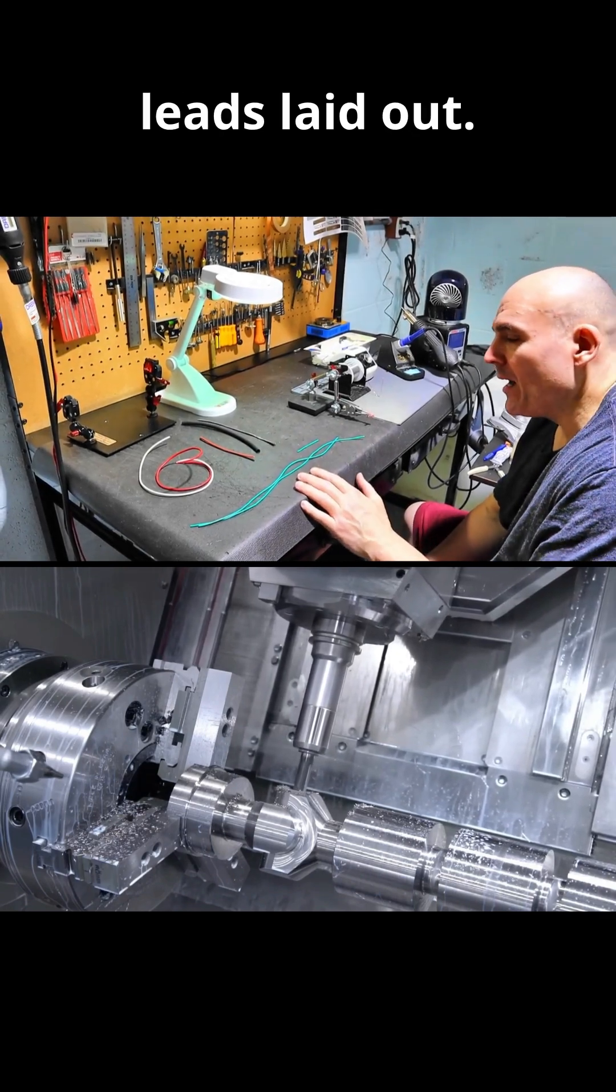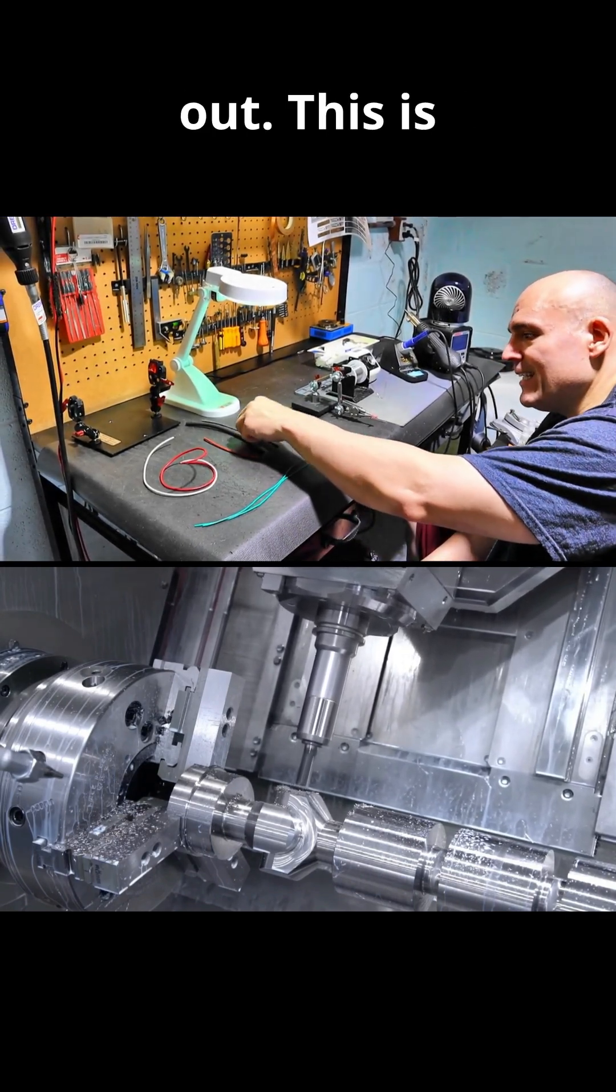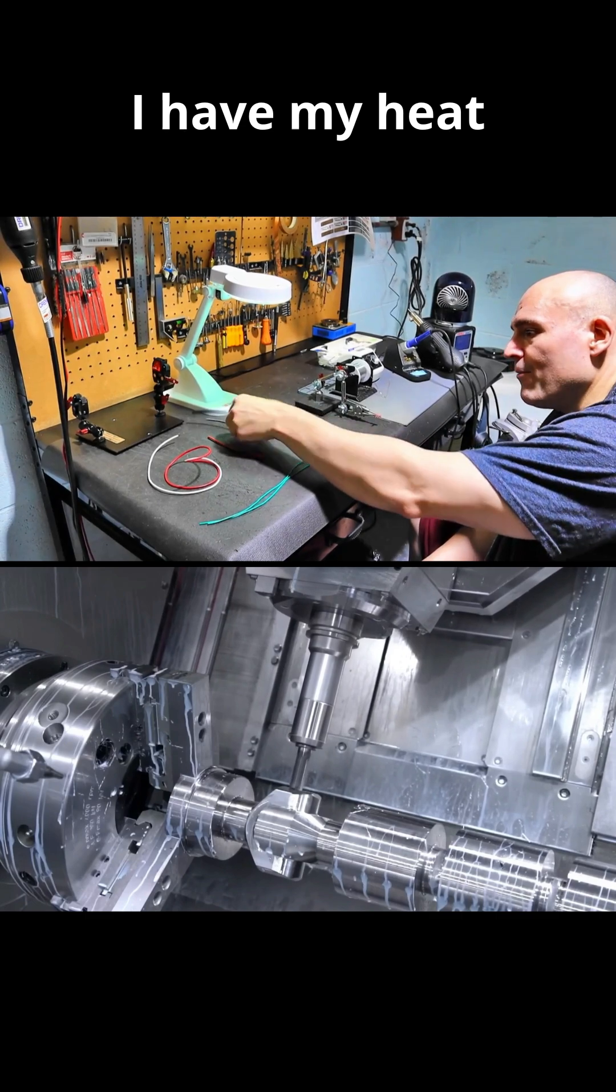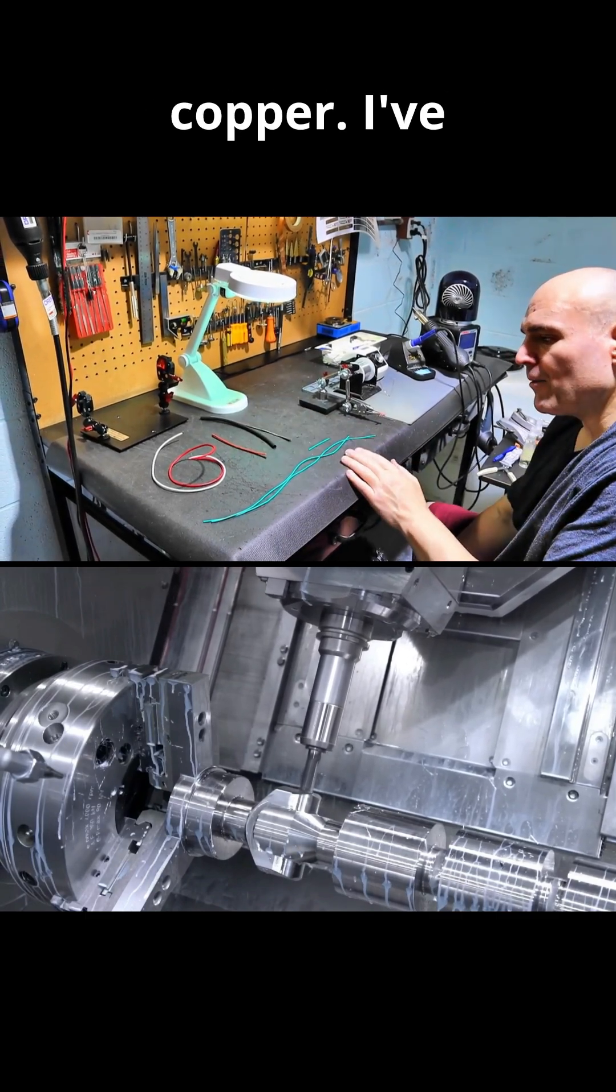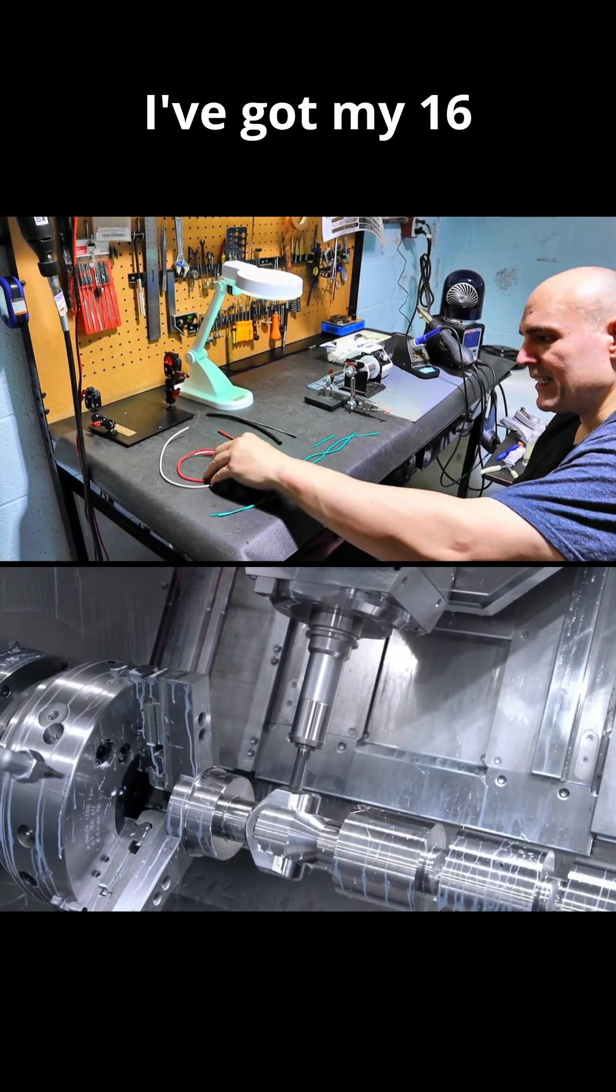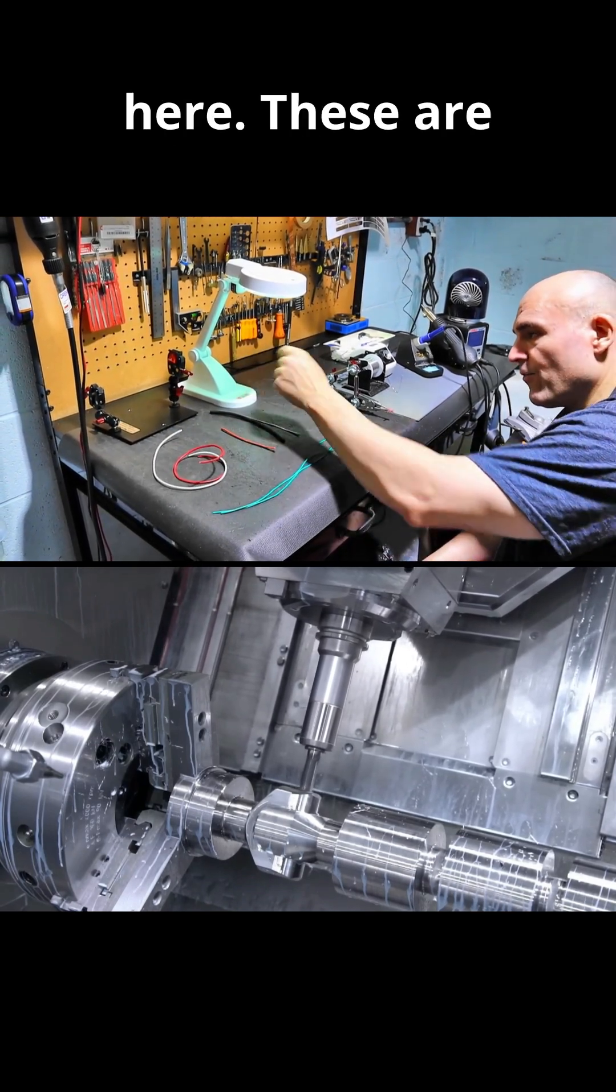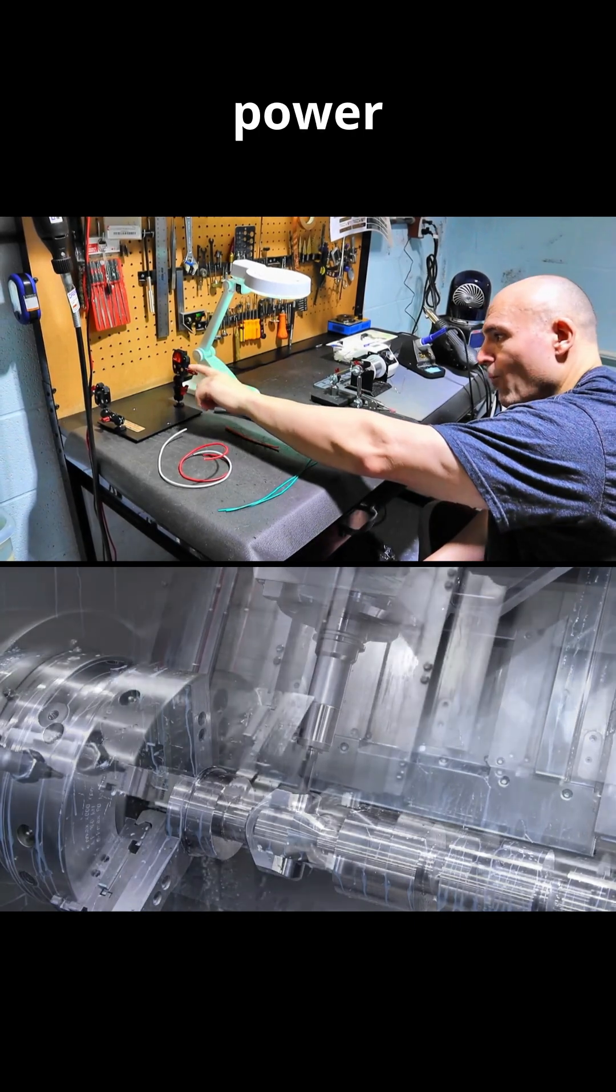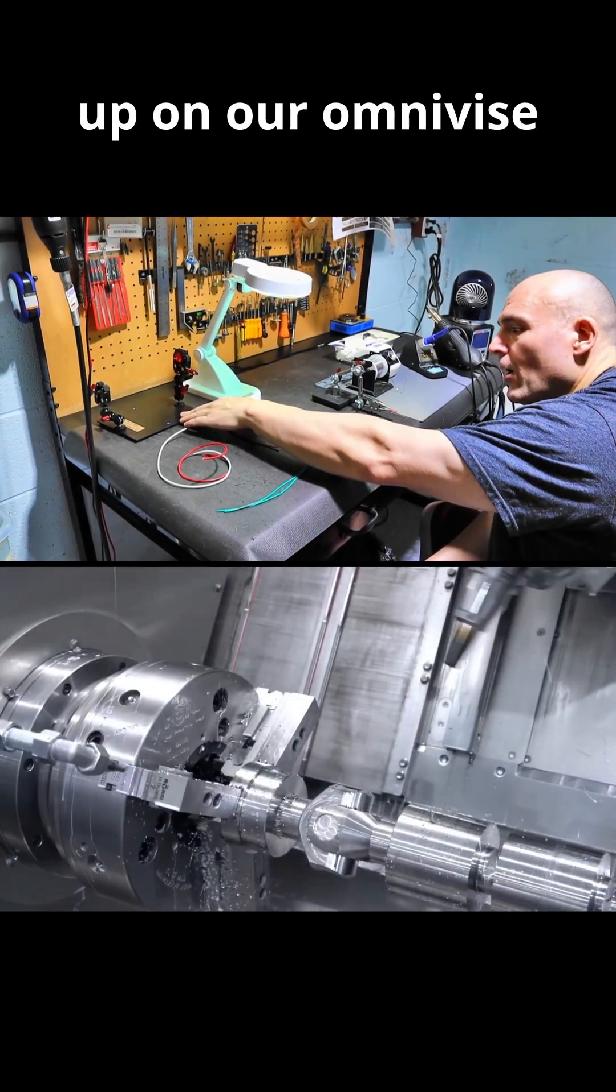You can see I have all my leads laid out. I've got my shielding laid out and this is tin-braided copper. I have my heat shrink for my tin-braided copper. I've got my e-stop leads here. These are 20 gauge silicone. I've got my 16 gauge leads here. These are for my switch which is for power. You can see it's already mounted up on our Omnivite.